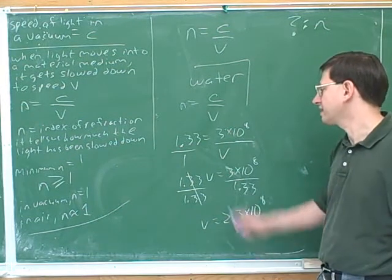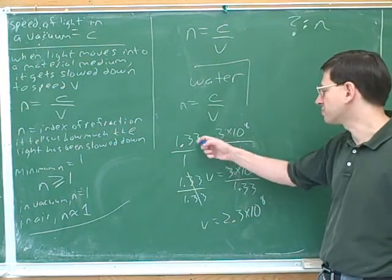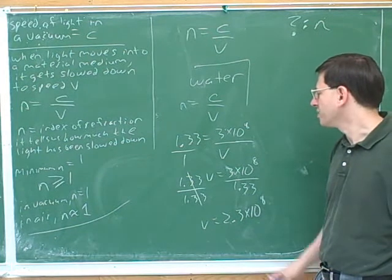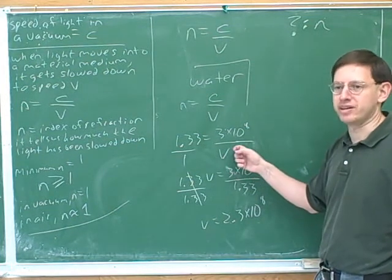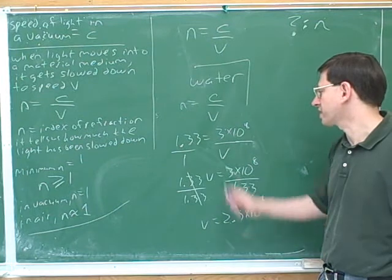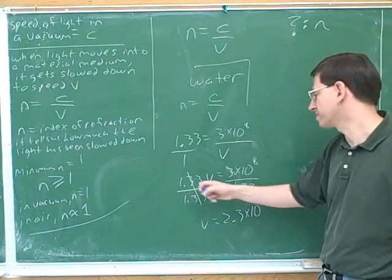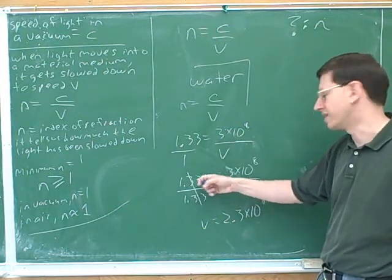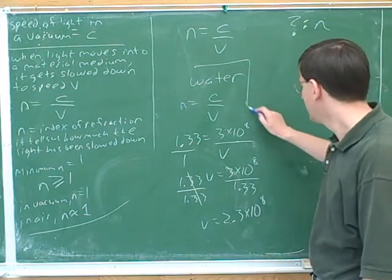And again, the big mistake people make is thinking they can do the algebra in their head. It's important to write down each step of the algebra. We can't leave a variable in a denominator. So if you have a variable in a denominator, a very good trick is to cross multiply. When we cross multiply, that gets the variable out of the denominator. And that makes it clearer how to proceed.